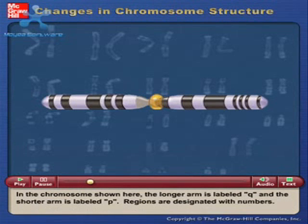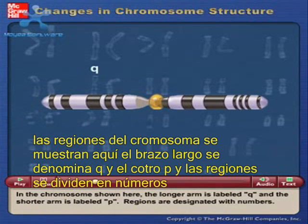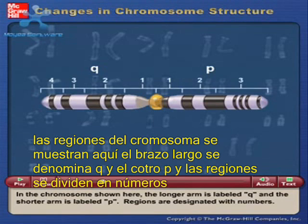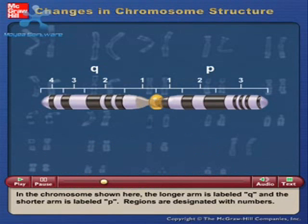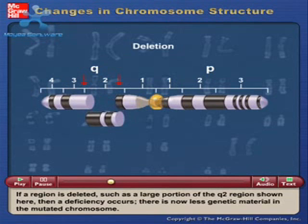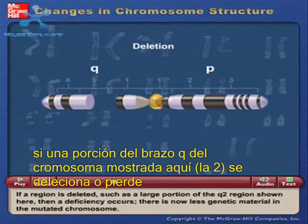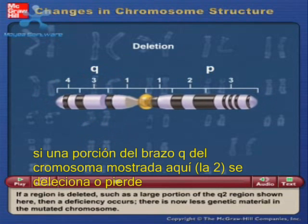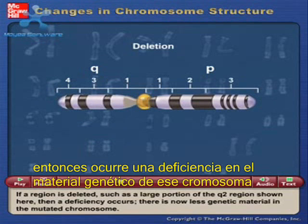In the chromosome shown here, the longer arm is labeled Q and the shorter arm is labeled P. Regions are designated with numbers. If a region is deleted, such as a large portion of the Q2 region shown here, then a deficiency occurs. There is now less genetic material in the mutated chromosome.